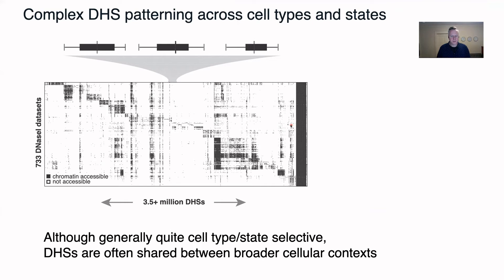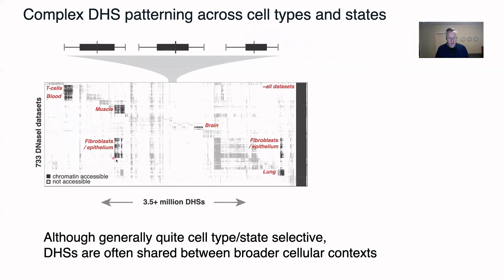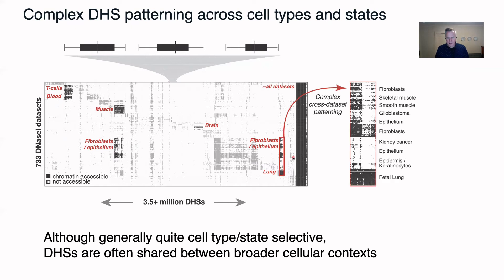Now that we have that common coordinate system, we can construct matrices where we describe the accessibility pattern of three and a half million DHSs versus 700-plus DNase-seq datasets. If something is black, it means that the DHS is accessible in a particular cell type. We see a lot of signal on the diagonal, which is expected — there are many regulatory elements accessible only in a small subset of cell types or states. But we also see a lot of off-diagonal pattern, including a large group of DHSs shared across a large group of different cell types, and complex cross-dataset patterning where tens of thousands of DHSs share quite similar accessibility patterns across quite diverse cell types.